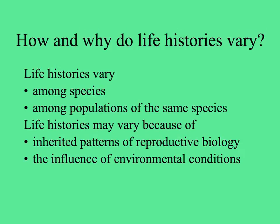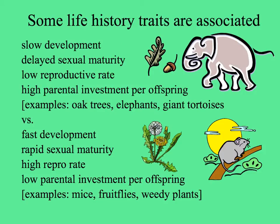Life histories can vary among species in a given place, within a family or group of plants, and also within a species there can be differences among populations in different places. Life histories may vary because of the influence of environmental conditions, inherited patterns of reproductive biology, or a combination of the two. Some life history traits are usually found together, such as slow development, delayed sexual maturity, low reproductive rate, and high parental investment.